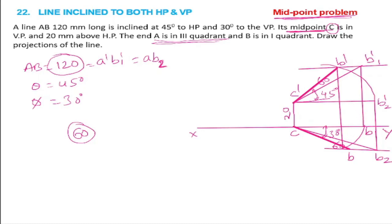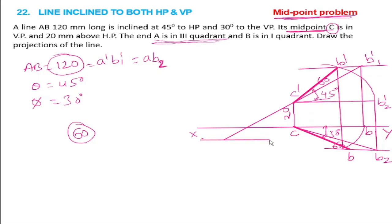The line length is 120mm. We already drew 60mm at 45 degrees inclination, so we extend it for another 60mm. We draw a small locus line parallel to XY. We take the scale distance of C dash B dash exactly straight and parallel, extend from there, and where it meets the locus line that point becomes our A dash point.